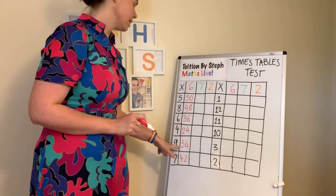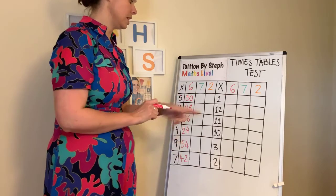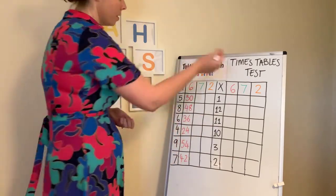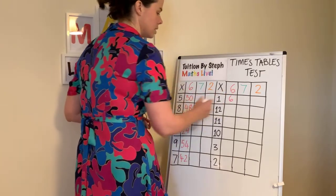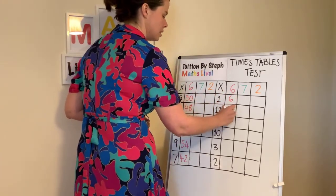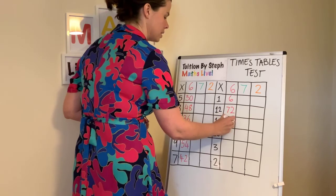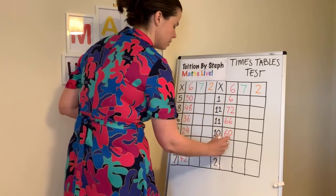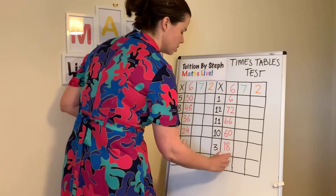And again, with something like nine sixes, if you know that ten sixes are 60, take off the six and that will help you remember it. One six, six. Twelve sixes, 72. Eleven sixes, 66. Ten sixes, 60. Six threes, 18. Two sixes, 12.